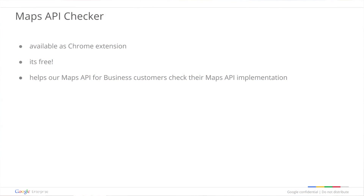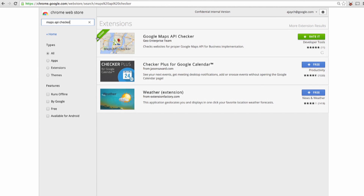Now let's hear about the last item you mentioned during the intro, which relates to a new Chrome extension for the Maps API. Could you elaborate on that? What the Geo Enterprise team has done is launched this really interesting tool called Maps API Checker. It's a Chrome extension, free of charge. Once you install it and visit any site that has implemented Maps API, it gives you instant feedback on things like whether the client ID has been implemented correctly, how many map loads you're using, if you are trying to get some layers from Maps Engine, and all that good stuff. Let me show you where to get this extension first. Under the Chrome extension store, if you look for Maps API Checker, it will appear in the search list.